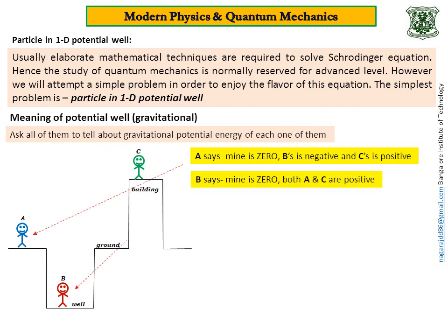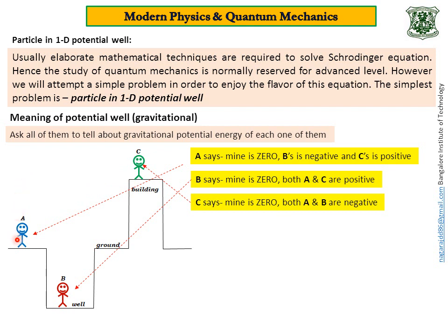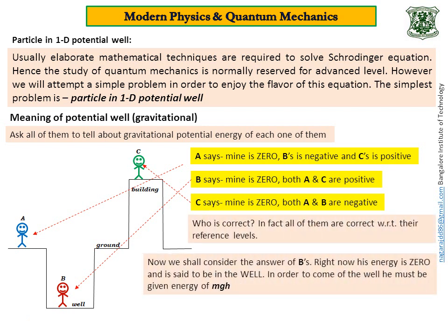When it comes to B, he says mine is 0 and both A and C are positive — he is also correct. But if you ask C, he says mine is 0 because he is taking his level as reference, and both A and B are negative because with respect to his level, A is at negative height — even B is also. The question: who is correct? All of them are correct because they are all talking about potential energy with respect to their own reference levels.